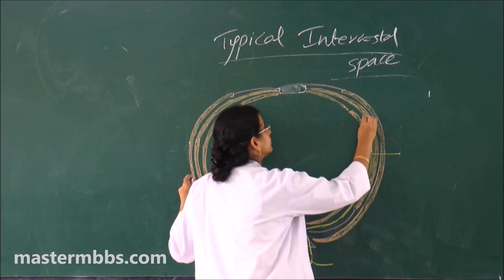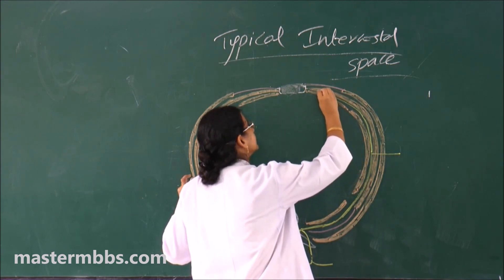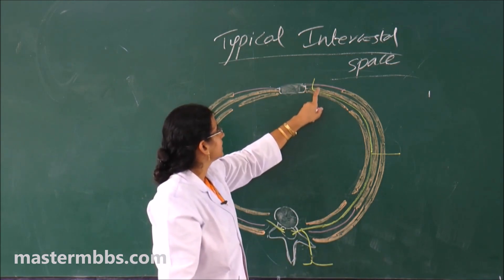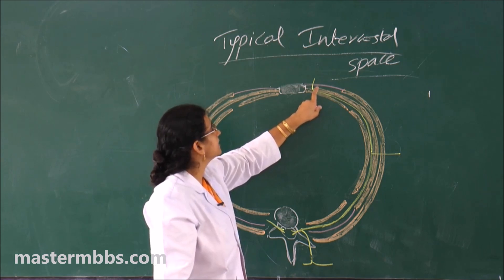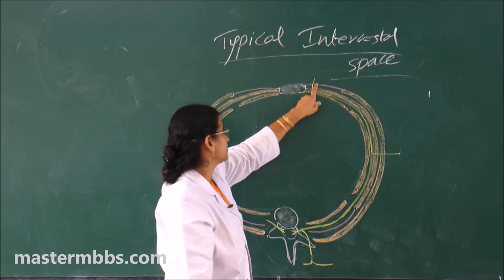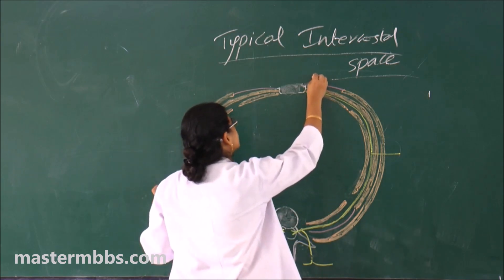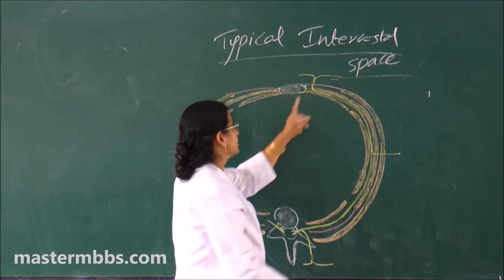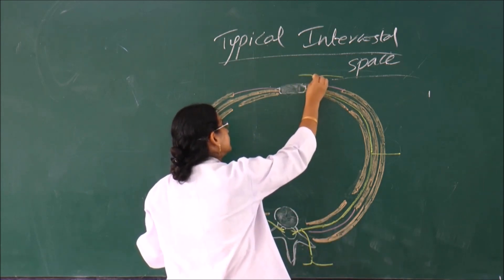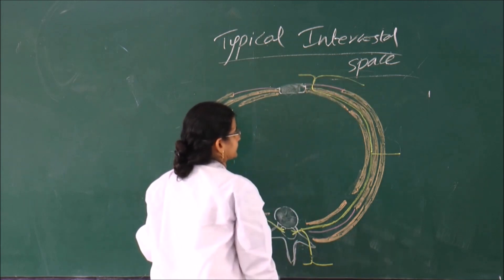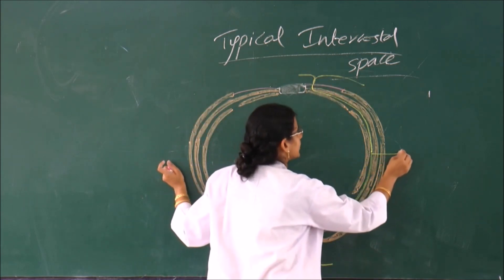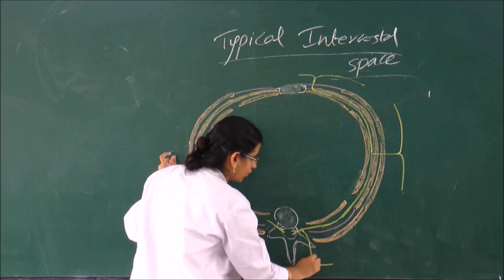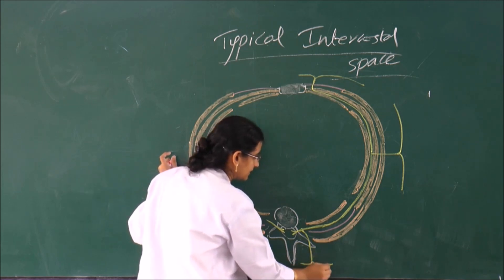The nerve runs further forwards and comes lateral to the sternum, where it perforates — it pierces the internal intercostal muscle and anterior intercostal membrane — and terminates as the anterior cutaneous branch. The anterior cutaneous branch divides into a medial branch and a lateral branch. The lateral cutaneous branch divides into an anterior branch and a posterior branch. The dorsal ramus divides into medial and lateral branches.